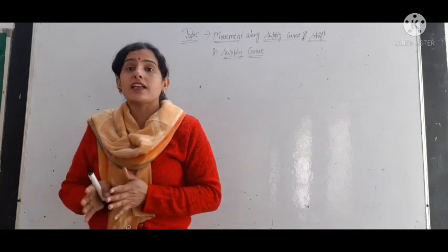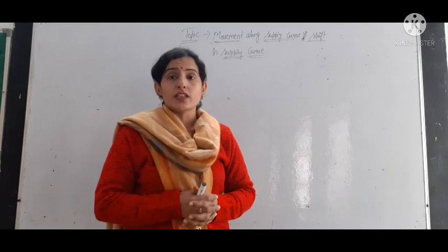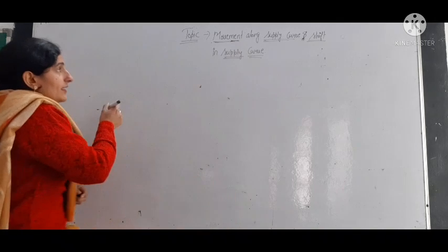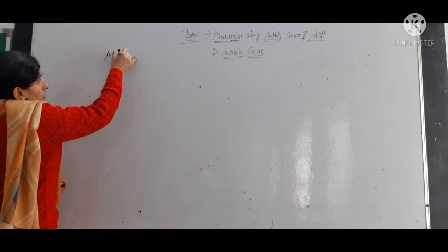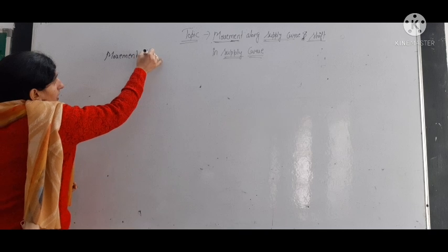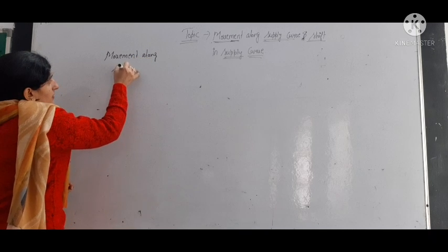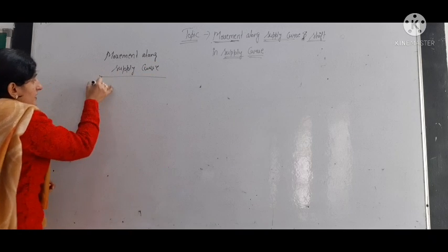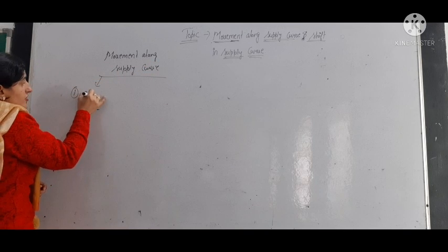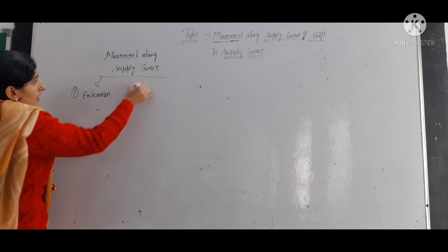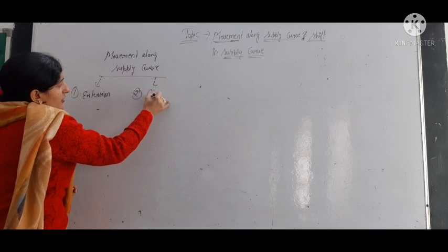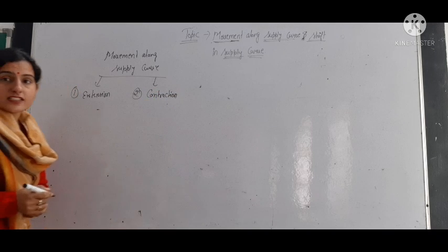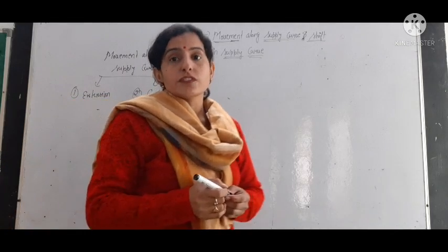So, what is movement along the supply curve? We have already discussed the supply schedule. Movement along the supply curve includes two things: first, extension of the supply curve, and second, contraction of the supply curve.